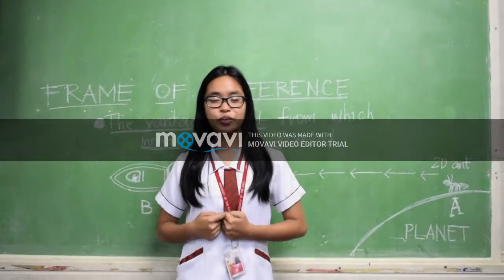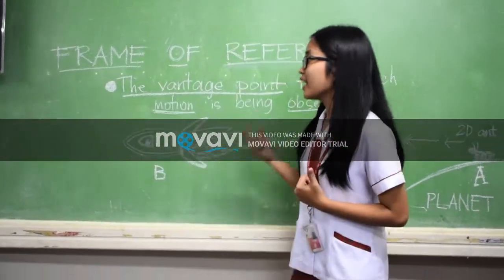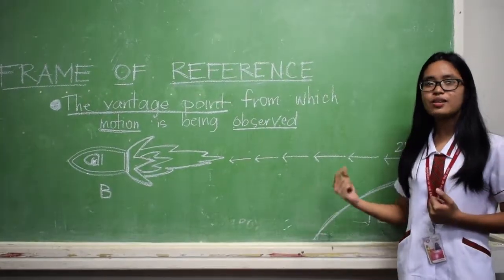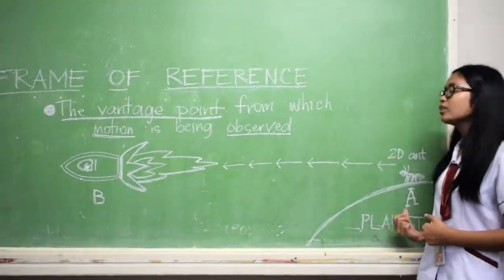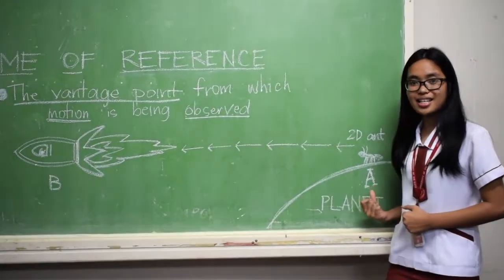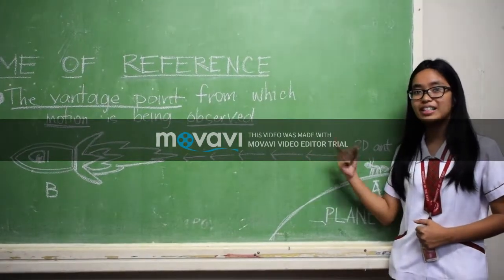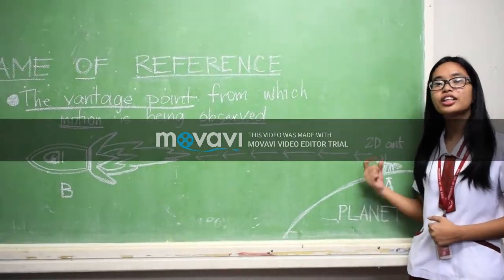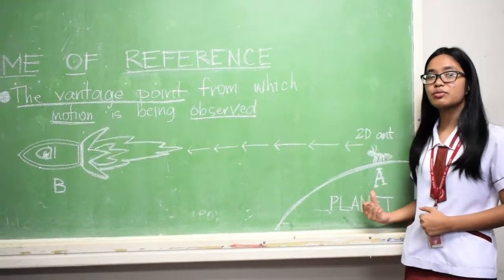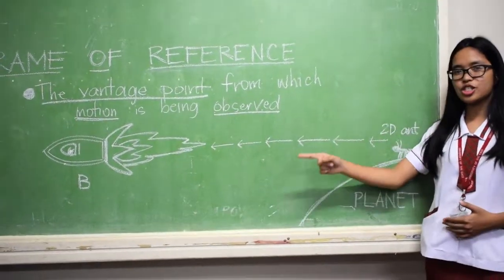Let's talk about the frame of reference. What is a frame of reference? It is the vantage point from which motion is being observed. Take for example a two-dimensional ant on a certain planet. This ant is staying still, and suddenly the ant saw a rocket passing by. As he observed that rocket, he became an inertial observer and has an inertial frame of reference, because he is staying still and observing the rocket.